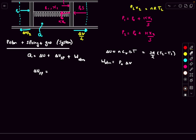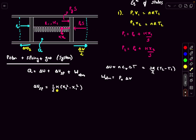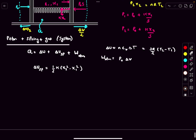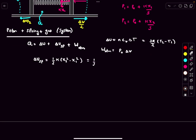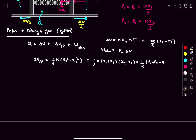The change in spring potential energy is (1/2)*k*(X2² - X1²), which can be written as (1/2)*k*(X1 + X2)*(X2 - X1). The term k*(X1 + X2) is obtained by adding the two force-balance equations: k*(X1 + X2) = (P1 + P2 - 2*P0)*S.